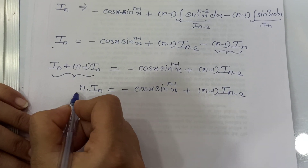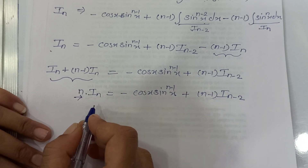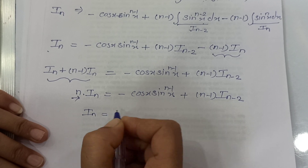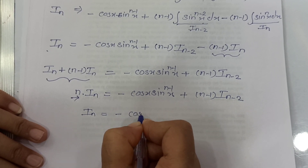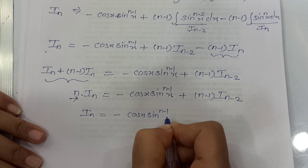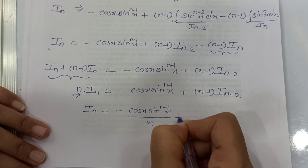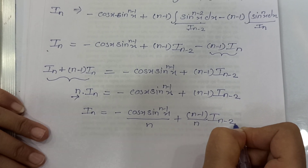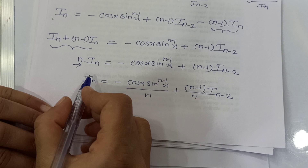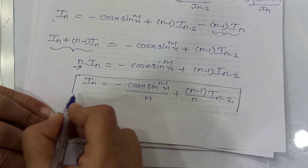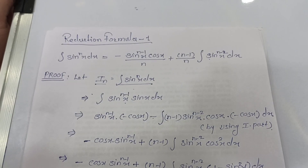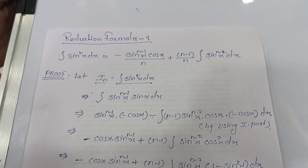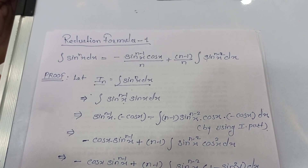Dividing both sides by n, we get In equals minus cos x sin raised to n minus 1 x upon n, plus n minus 1 upon n, In minus 2. This proves our reduction formula number 1. We will put the PDF of this entire proof in the description. Kindly stay tuned for more videos on the reduction formula.